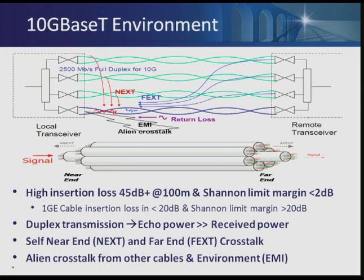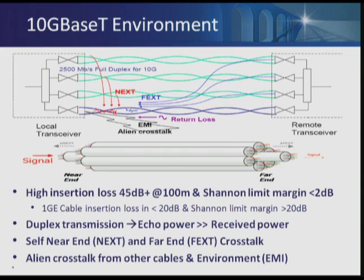It's worth noting that the insertion loss for 10G Base-T at Nyquist is about 45 dB, compared to the gigabit previous generation which had about 20 dB. The Shannon limit margin for 10G Base-T is less than 2 dB. The IEEE standard pressed as much as possible into the wire, getting very close to the Shannon limit, whereas the previous generation had greater than 20 dB margin. Duplex transmission means echo power at the end of 100 meters of cable is about 6 to 9 dB greater than the signal power. Near-end and far-end crosstalks are significant and must be canceled, and alien crosstalk from the adjacent six-around-one configuration must be accounted for in chip design.